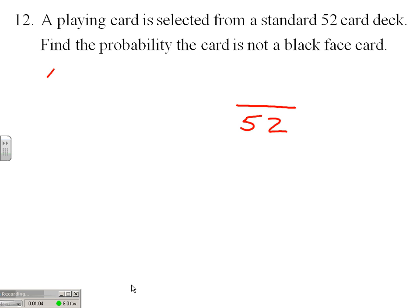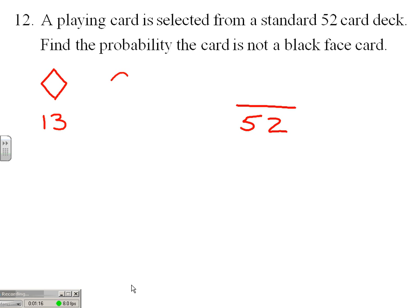Diamonds — any diamond would be a winning card. We have 13 possible diamonds; those would all be winners. Hearts — 13 winners.